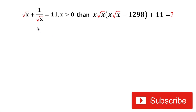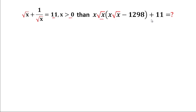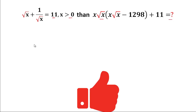Welcome back! Today we will solve this interesting mathematical problem. The given problem is: root(x+1) divided by root(x) equals 11, where x is greater than 0. We have to find the value of x·root(x) in the bracket [x·root(x) - 1298] plus 11.